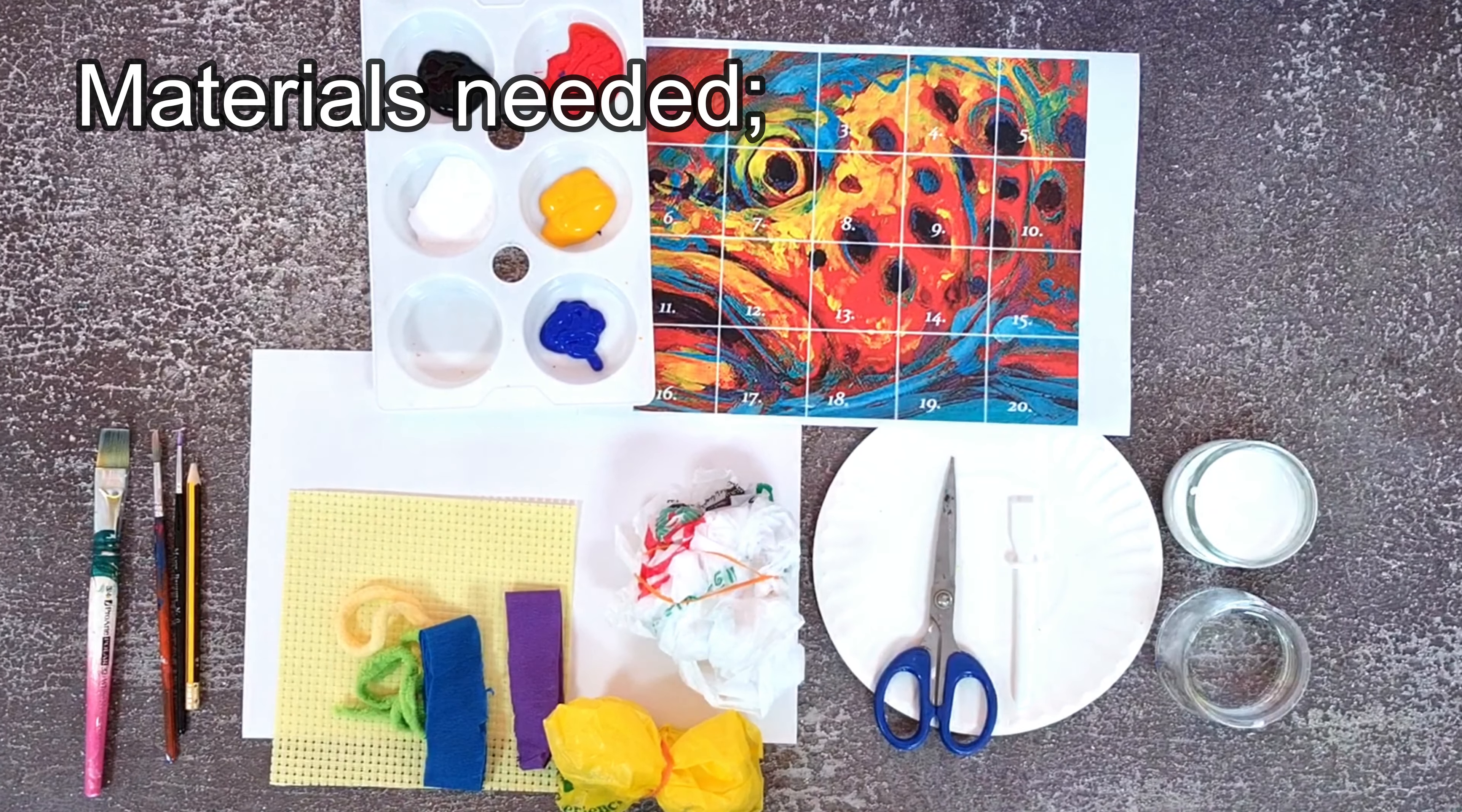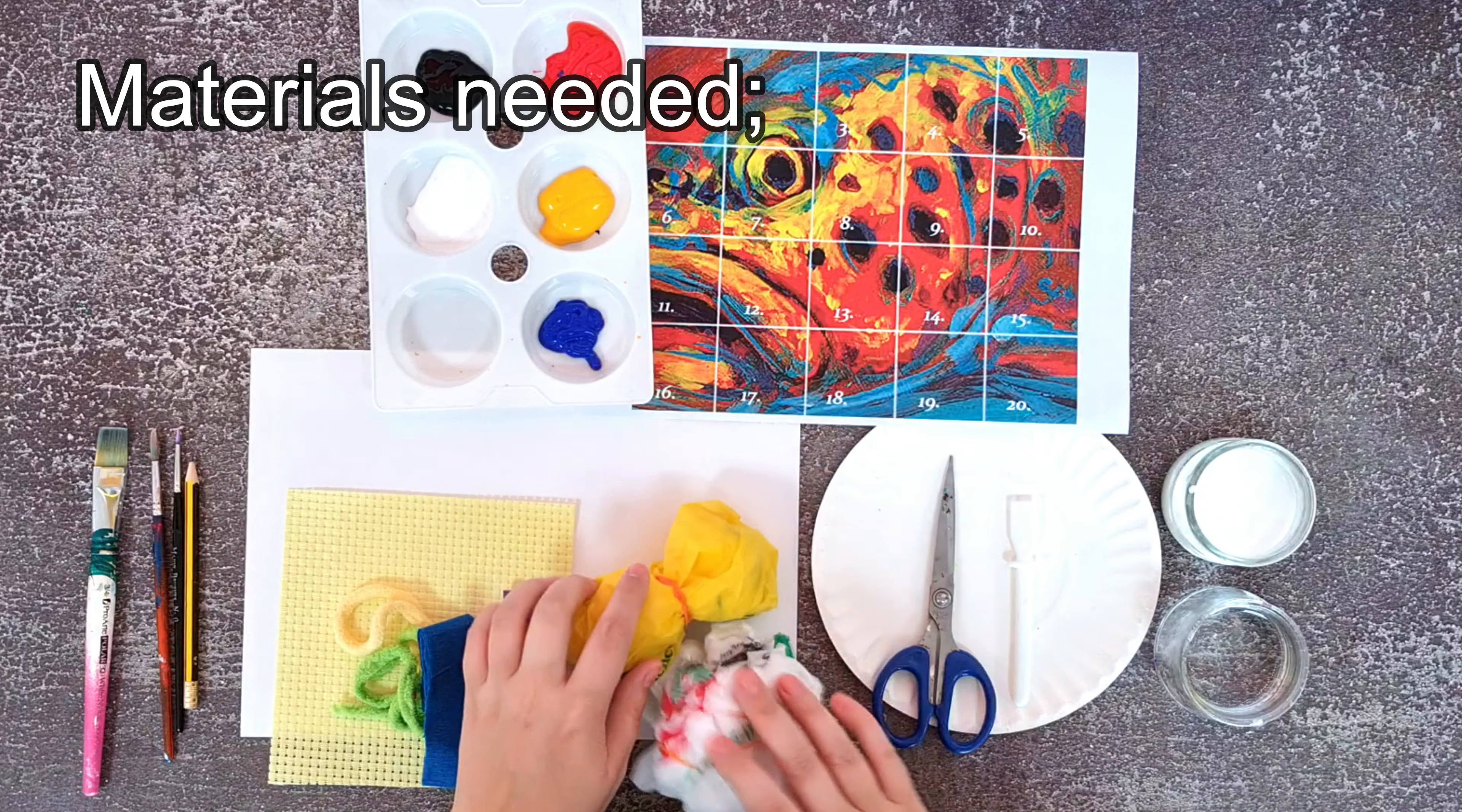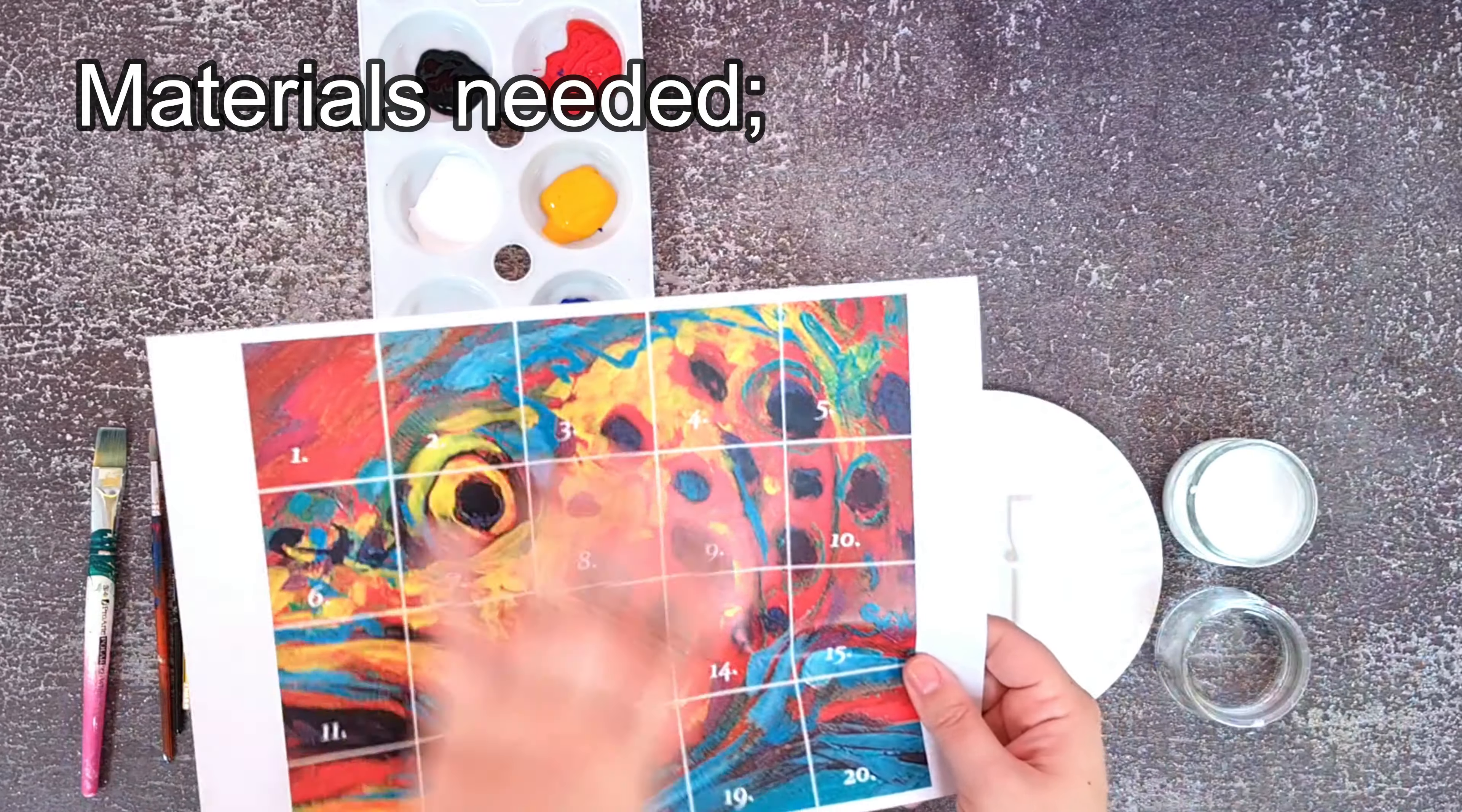Materials you will need for this lesson are some collected items of waste materials from around the home. They don't have to be the same as this. I've got two plastic bags that I'm going to use for some of my colour in my collage. I've got some scraps of crepe paper and also some off cuts of material. If you have an old piece of fabric at home you can cut that up to match the colour in your square.